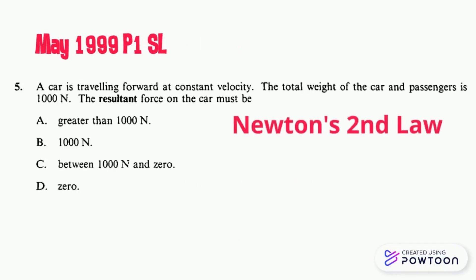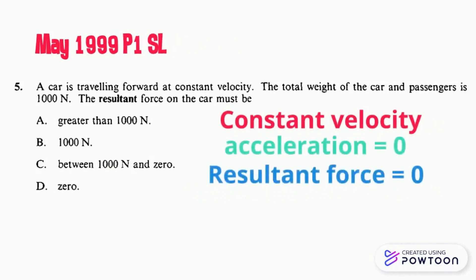According to Newton's second law of motion, resultant force equals mass times acceleration. Constant velocity means there's no acceleration and there is no resultant force, similar to the previous example. So the correct answer is zero.